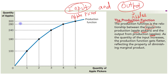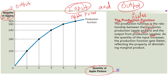On the vertical axis we have taken quantity of apples, that means quantity of output. And on the horizontal axis we have taken quantity of apple pickers, so this is quantity of input. So the production function describes the relationship between output and input.